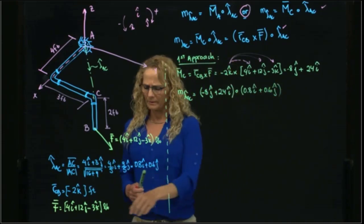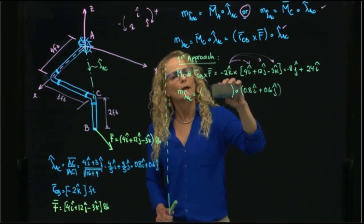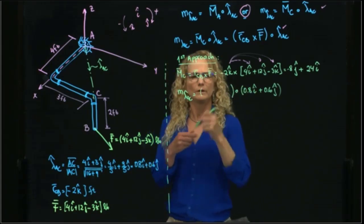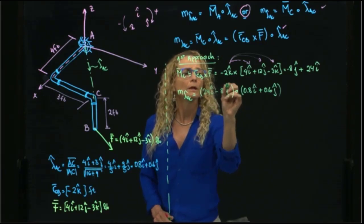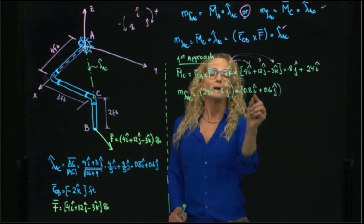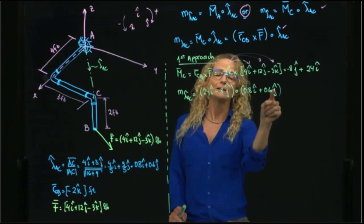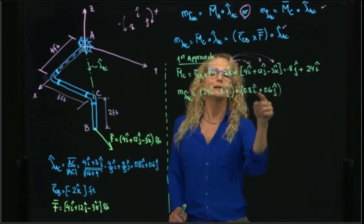And we will do a dot product with the vector that we just found, that is 0.8 in i plus 0.6 in j. To avoid confusion, I will write it in the proper order, so that will give me 24i minus 8j. Now that I have a dot product, remember that i dot i is 1, i dot j is 0, j dot i is 0, and j dot j is 1.